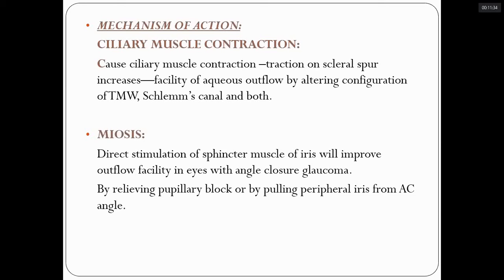In open-angle glaucoma, pilocarpine causes ciliary muscle contraction, which pulls the scleral spur. This facilitates aqueous outflow by altering the configuration of the trabecular meshwork and Schlemm's canal. As it pulls the scleral spur, it opens Schlemm's canal, facilitating aqueous outflow.